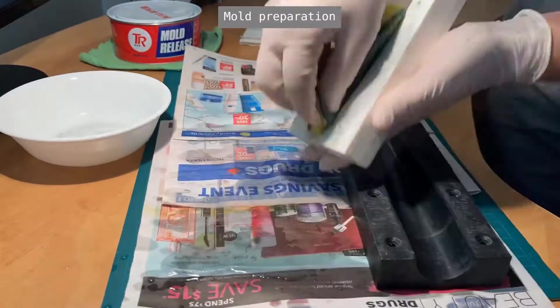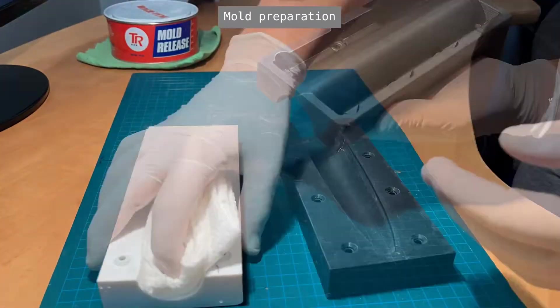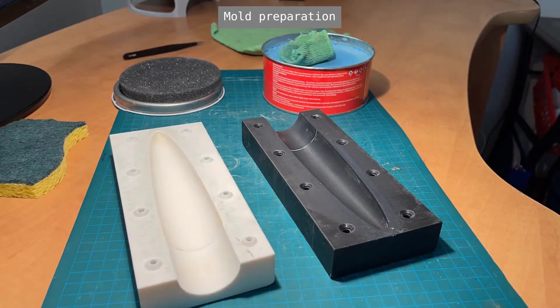Since these molds have been used in two previous layups, we begin by cleaning the surface with an abrasive pad such as a scotch-brite pad. After all the bits have been cleaned off, the molds are washed with soap and water and then allowed to dry.